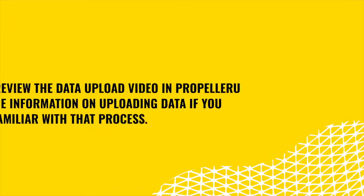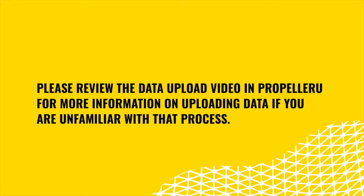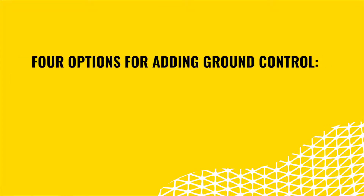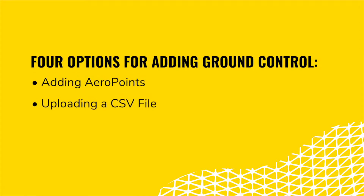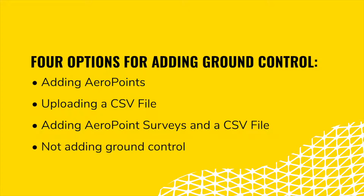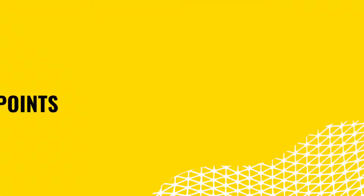You can submit your ground control information in step three of the data upload process. Please see our data upload video for more information on uploading data if you are unfamiliar with that process. Based on your workflow and the data you've uploaded, you will see different options for ground control. There are essentially four options for adding ground control within the platform: adding AeroPoints, uploading a CSV file, adding an AeroPoint survey and a CSV file, and not adding ground control. If you are utilizing the PPK workflow, you will only see the options to add the AeroPoint survey or to add the AeroPoint survey along with the CSV file.